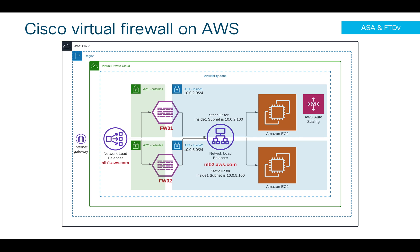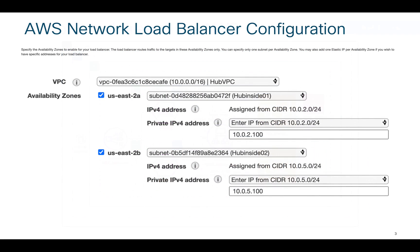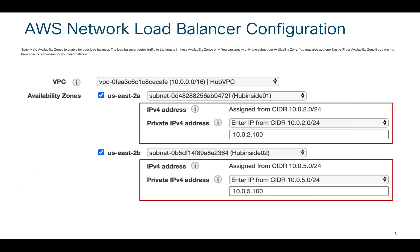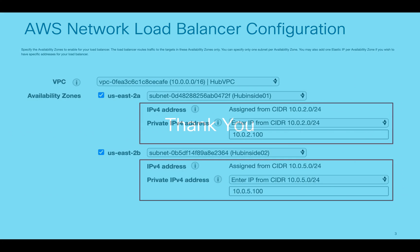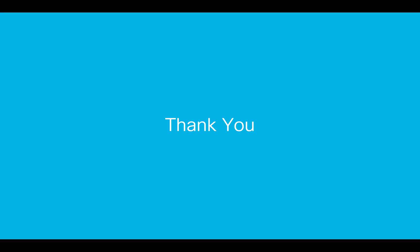That's it for this video. Here is the config you need on your NLB side: just one static IP address per availability zone and you are good to go. I hope you enjoyed this video — thank you for watching.